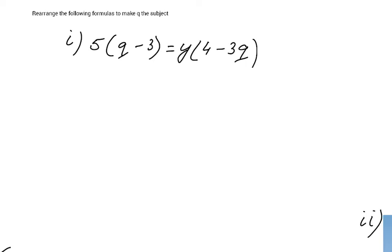5 bracket Q minus 3 bracket equals Y bracket 4 minus 3Q bracket, and we have to make Q the subject, which means eventually it has to say Q equals then all the rest. And in all those terms on the right side you cannot have any Q's here.